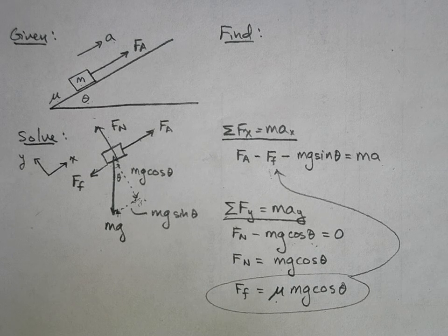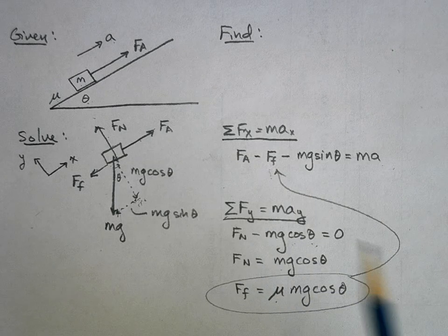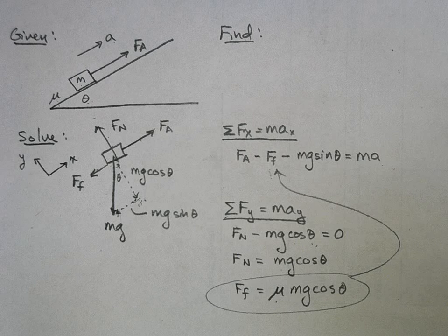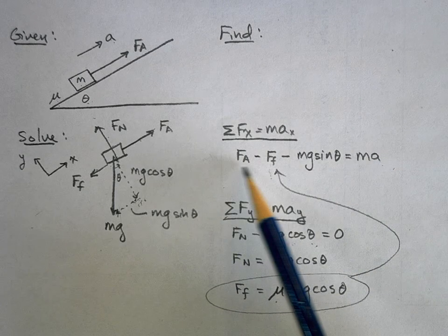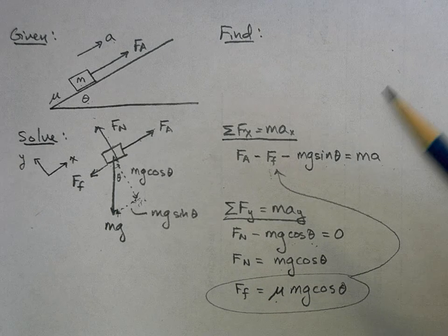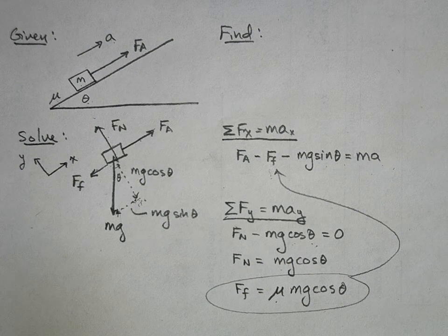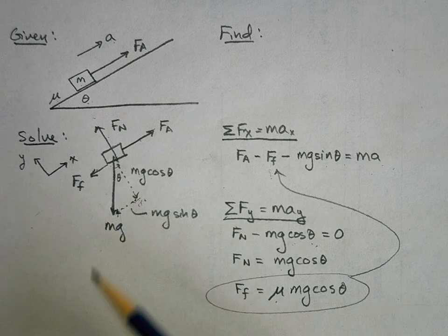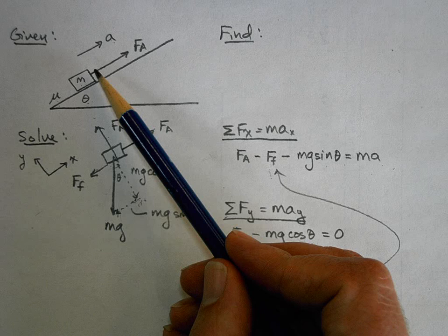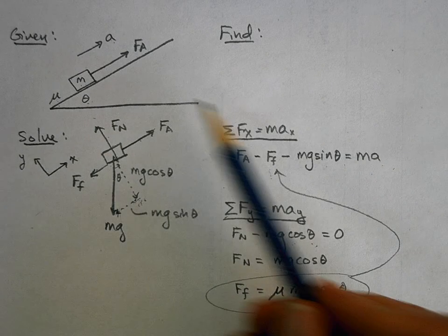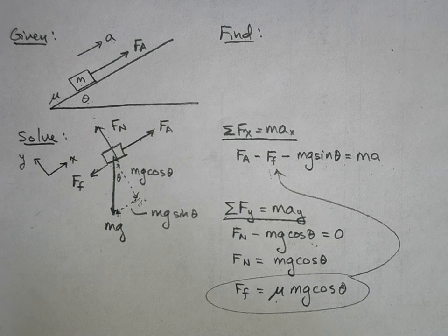This setup lets you solve any inclined plane problem I give you. If the object moves at constant velocity, acceleration is zero — just set everything equal to zero and solve. If acceleration is down the incline, make it negative or flip the x-axis. If the crate is sliding down, friction reverses direction and points up the incline. Keep track of those details, but this basic problem-solving process will get you through it.